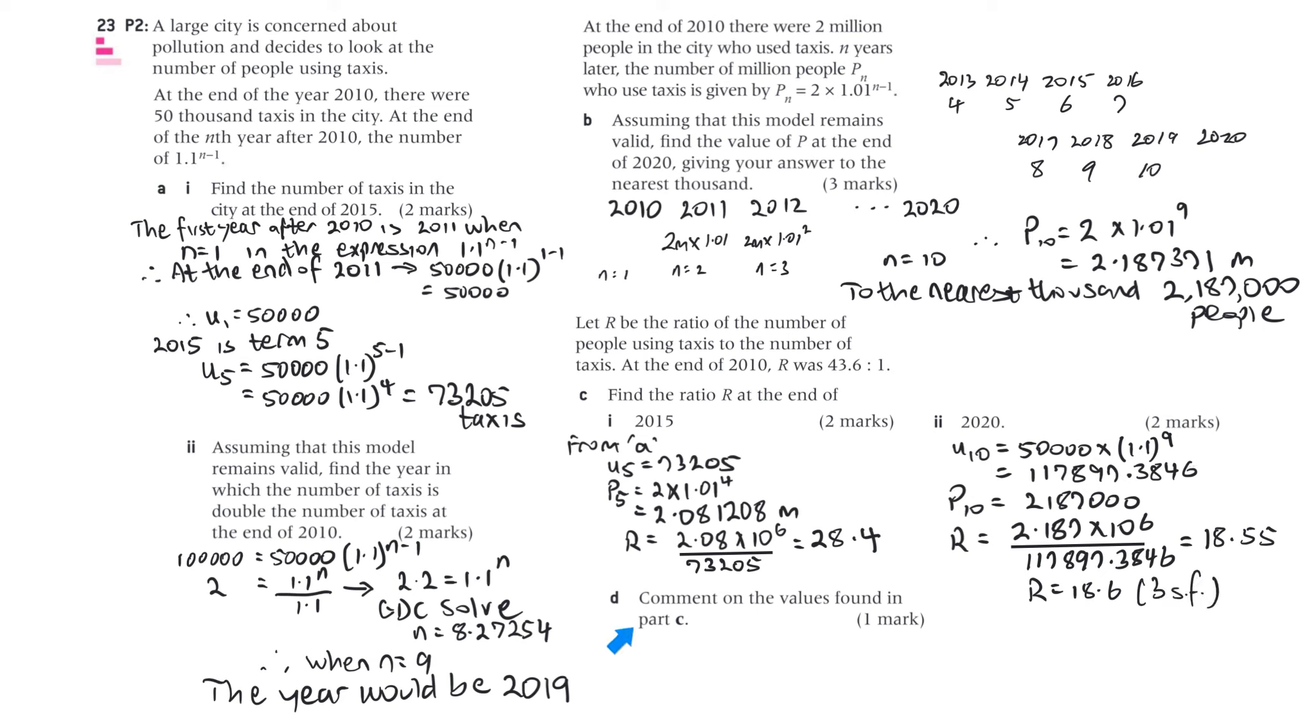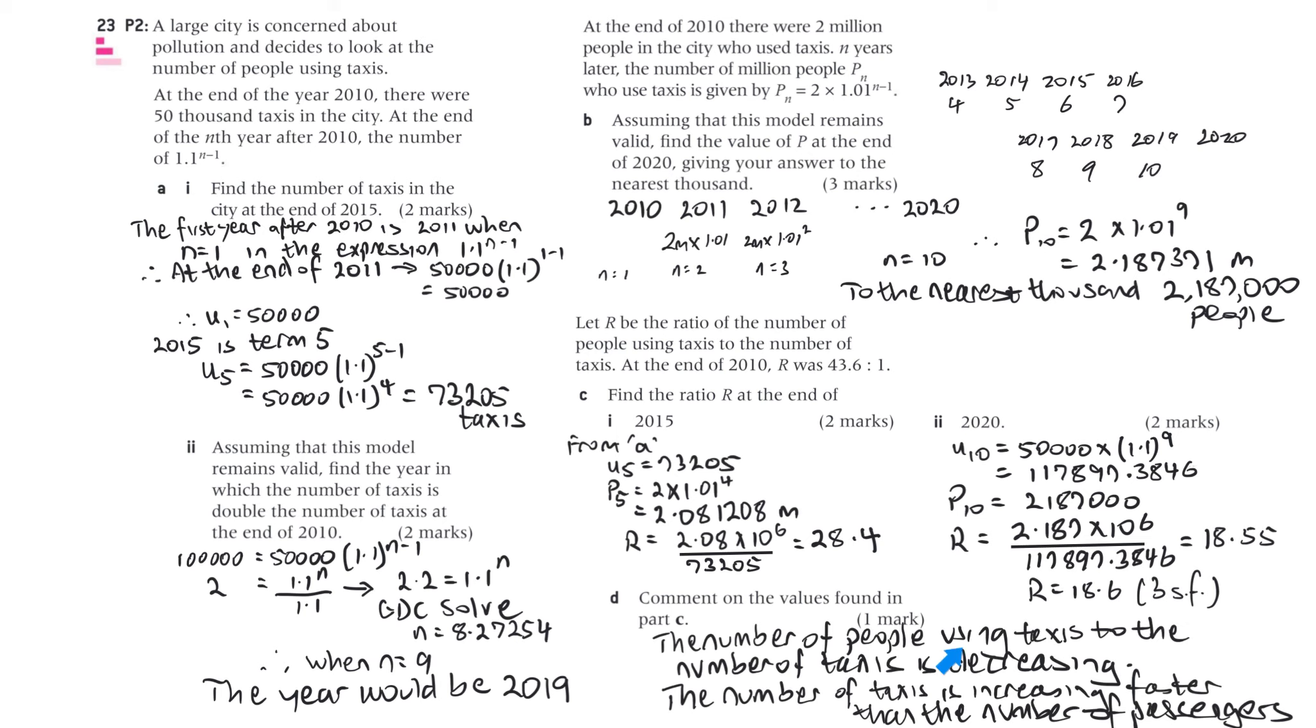And part D, comment on the values found in part C. The number of people using taxis to the number of taxis is decreasing. The number of taxis is increasing faster than the number of passengers.